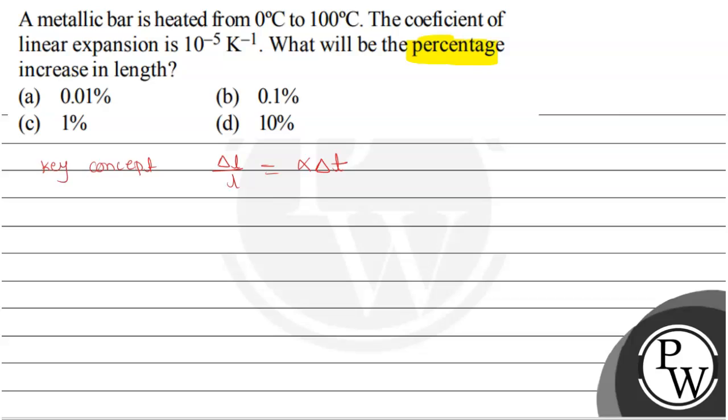Percent increase is into 100%, you need to write here. So increase in the length to the original length, to get the percent increase in length. Just simply you need here delta L by L into 100% because you need it in the form of percent.